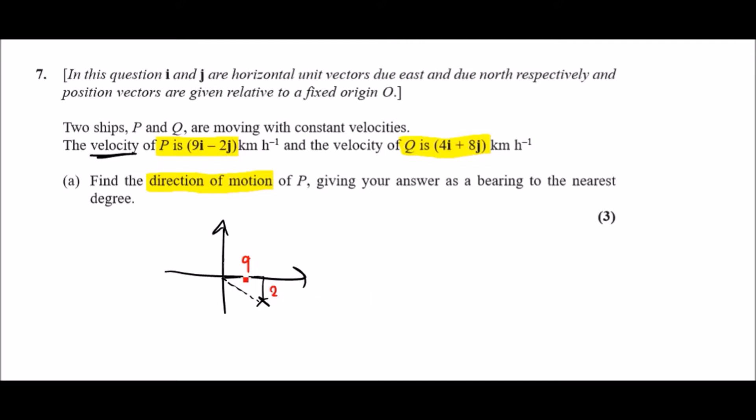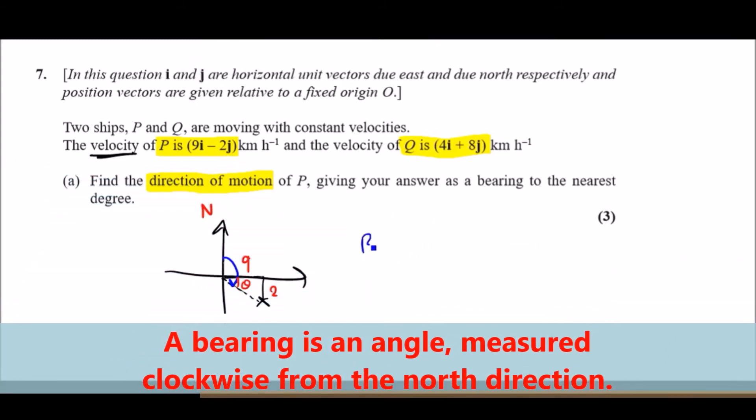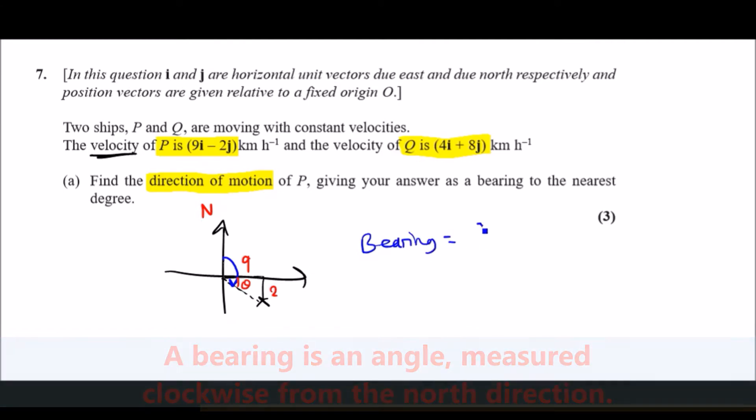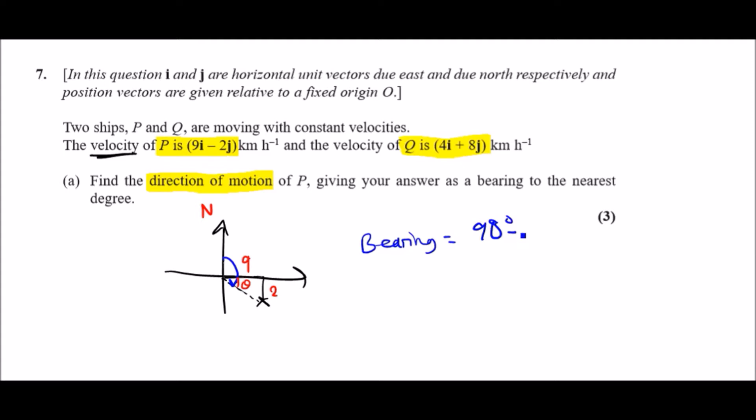All we have to do is calculate the angle. Because we're working out the bearing, it's always from the north line, so we need to find the total angle from the north line straight to theta. Basically we're looking at a bearing of 90 degrees plus the value of theta.